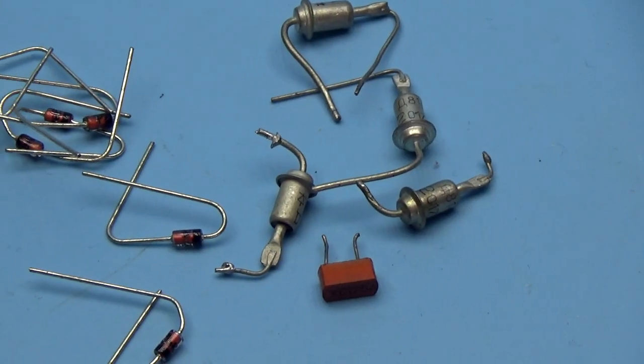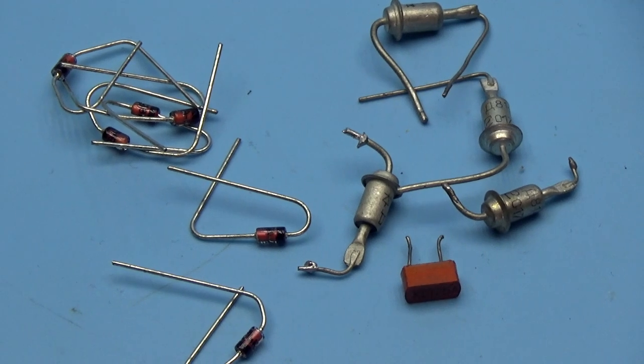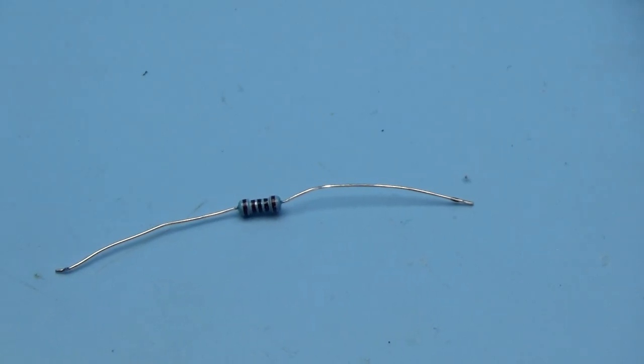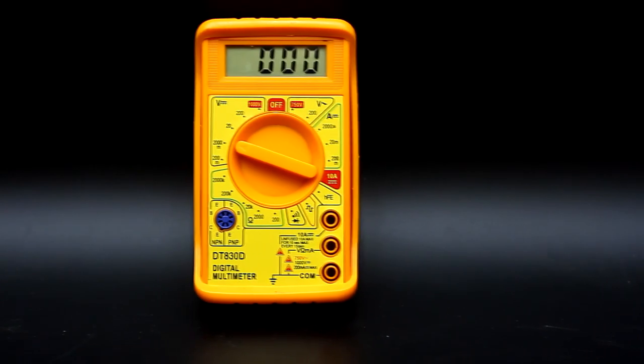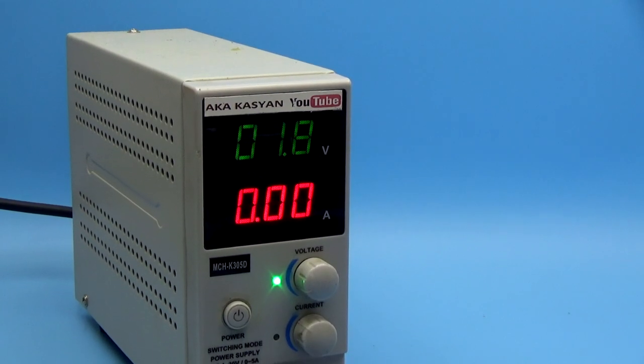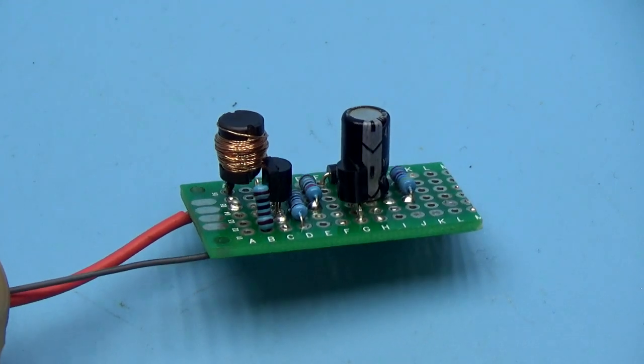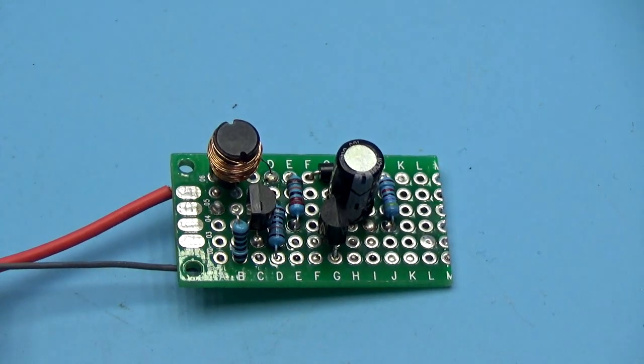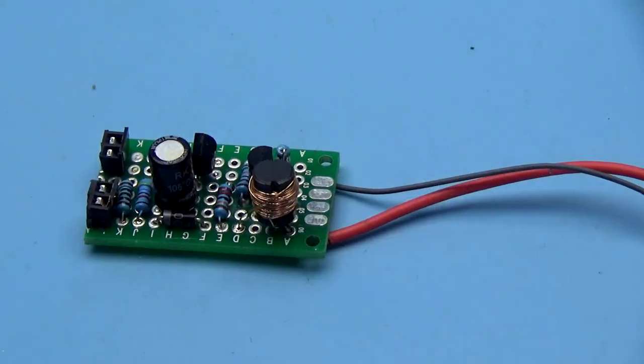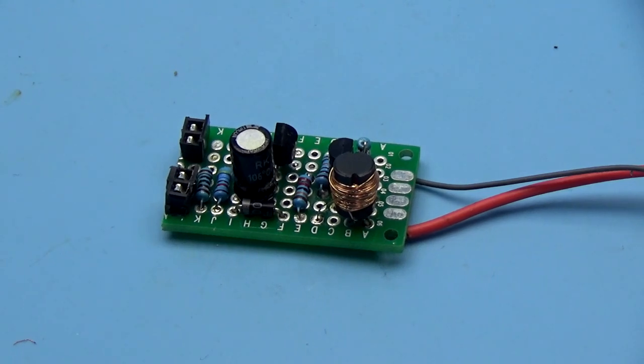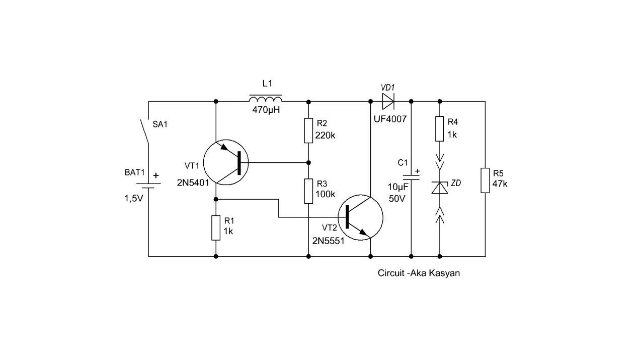Almost everybody knows how to check the zinnier diode. It requires a power source, a limiting resistor, and a multimeter. But the laboratory power source isn't always at hand. So, our next device allows you to identify the stabilizing voltage of the zinnier diode and, in general, test it for operability. For its operation, an additional power source is needed.